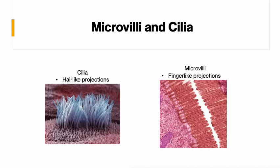Microvilli are the finger-like projections. These are used to increase surface area in certain cells, especially ones used for absorption, such as in the intestines. The more surface area something has, the more it can absorb. So the main function is to make more space so we can absorb more. And then the cilia — these are the hair-like projections.